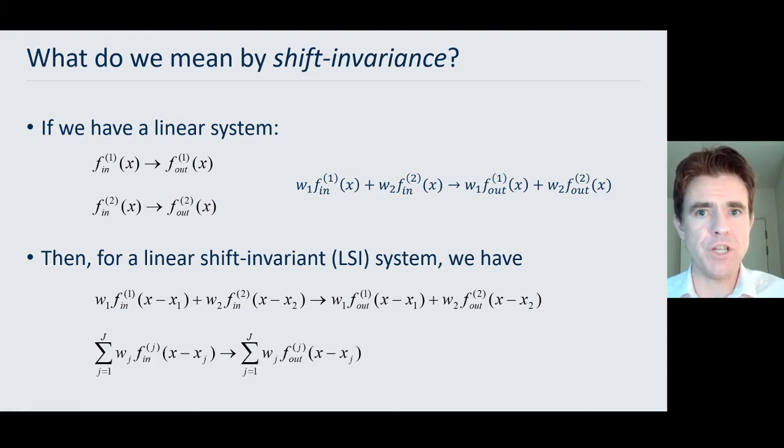Hopefully this will become even clearer in the following slides because this is easier to understand in the context of 2D imaging. We could have capital J different input functions variously shifted by amounts xJ and variously weighted by weighting factors wJ, put them through our LSI, linear shift invariance system and what we get is the outputs. Remember these are just the individual outputs when the input is presented by itself. They're also shifted by the same amounts xJ and weighted by the same amounts wJ.